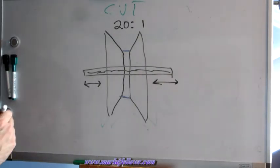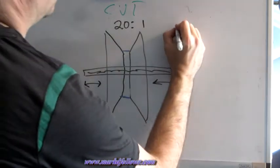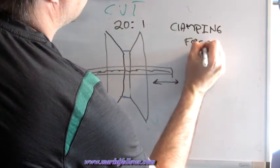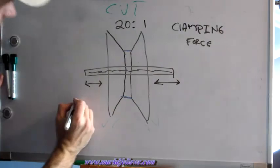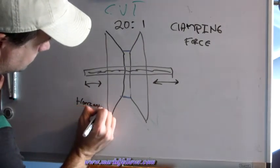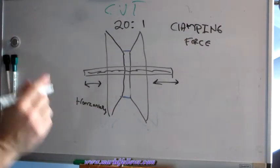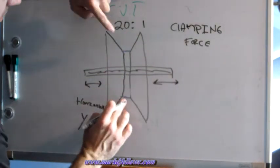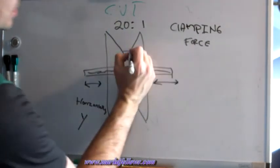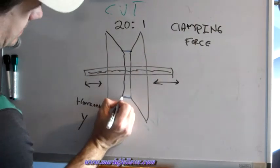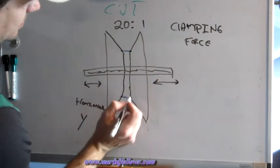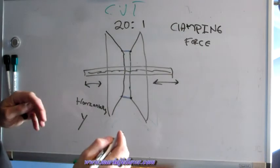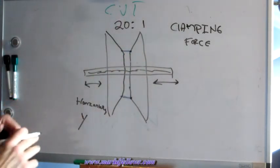There's something called clamping force going in like this, in this direction. This is moving horizontally. Let's say this is in the Y direction. So to propel the car, these are going to move in, and at some point, this belt that wraps the whole way around is going to get wedged in there. The contact points are going to be here and here. And what you're relying on is the friction between these points to lock the belt to the variator and propel the car.